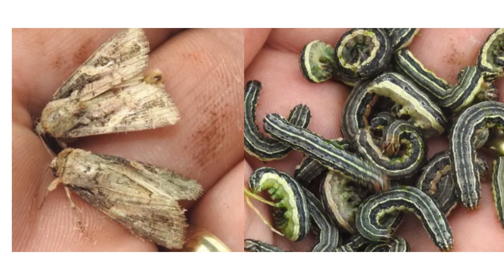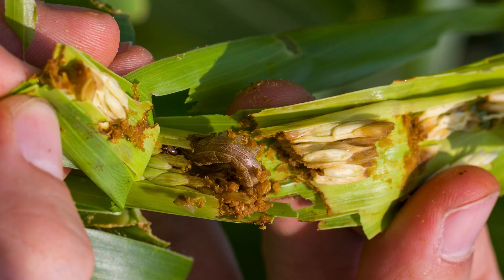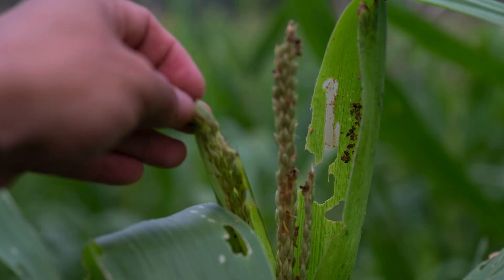Armyworms are a type of caterpillar that can cause significant damage to crops. There are several species of armyworms, with the fall armyworm Spodoptera frugaperda being one of the most notorious. These pests are called armyworms because they often move in large groups resembling an army and can quickly devour entire fields of crops.